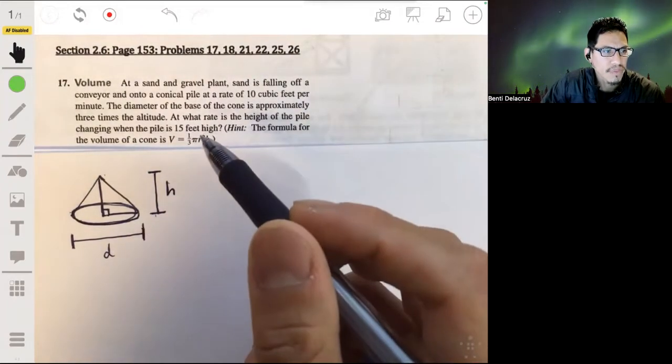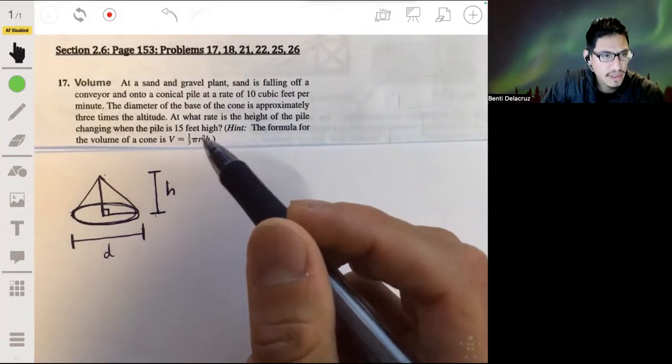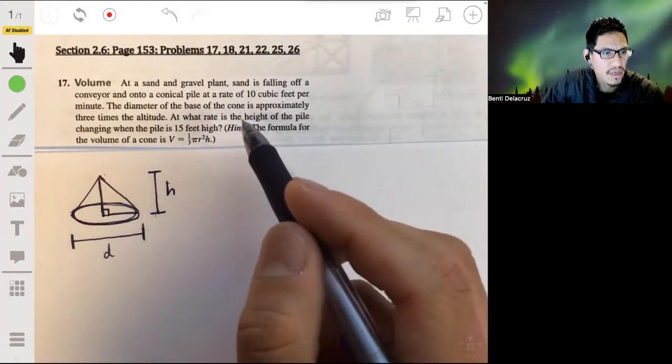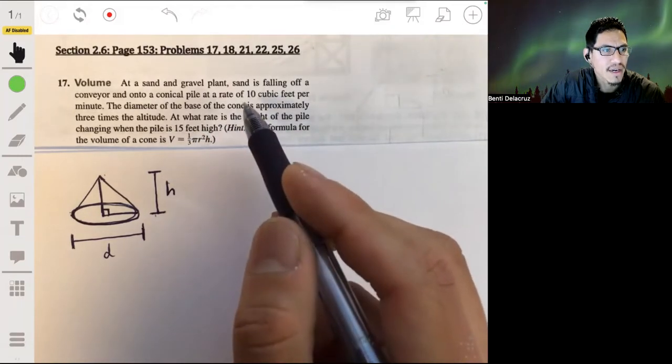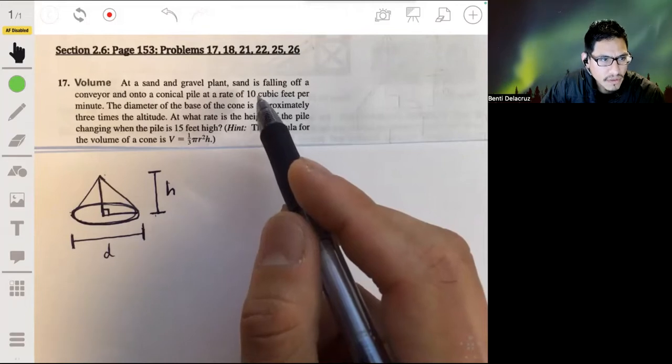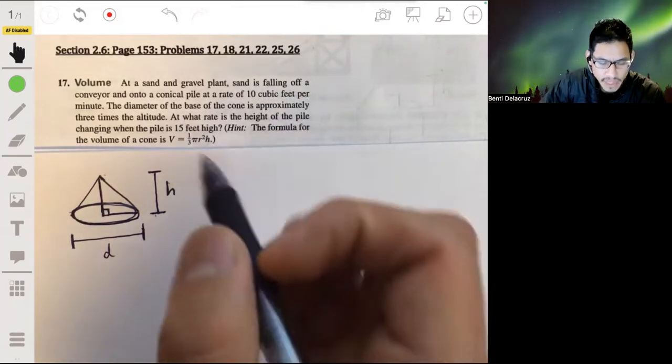And so let's look at what we're given. Given that the rate of change in the volume of the pile is 10 cubic feet per minute.